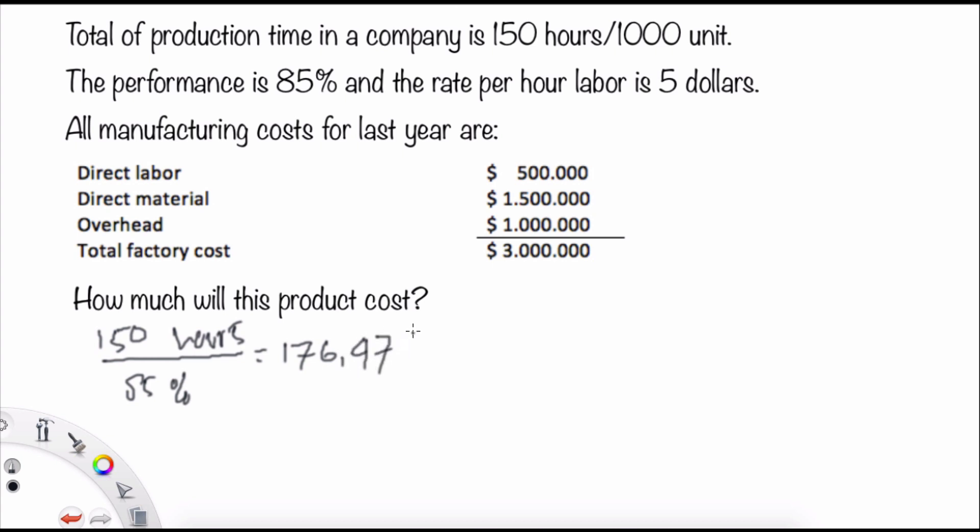So we will have 176.47 hours. And we can see that the rate per hour labor here is $5. So we have to multiply each one with $5.